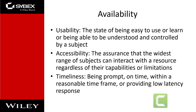The third principle of the CIA triad is availability, which means authorized subjects are granted timely and uninterrupted access to objects. Availability protection controls support sufficient bandwidth and timeliness of processing as deemed necessary by the organization or situation. If a security mechanism offers availability, it offers a high level of assurance that data, objects, and resources are accessible to authorized subjects.